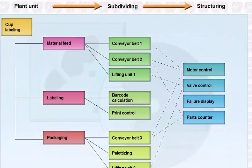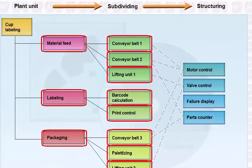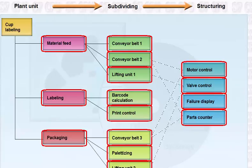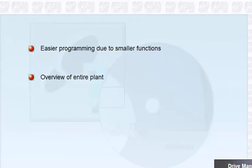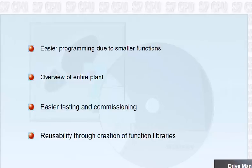Step 7 supports you in this task with its programming and block concept. A Step 7 block is a part of the user program separated by function, structure and purpose which enables structuring extensive and complex control tasks. As a user you have the advantage of easier programming due to smaller functions, better overview over the entire plant, easier testing and commissioning of your plant as each component can be dealt with individually, and the possibility of reusing a once realized functionality by generating libraries.